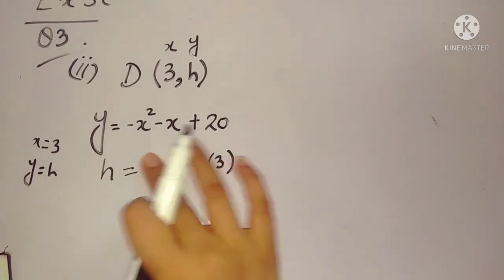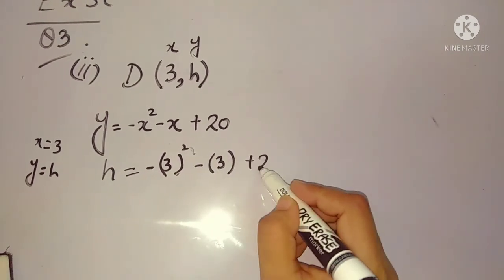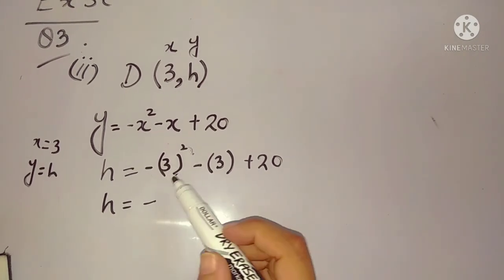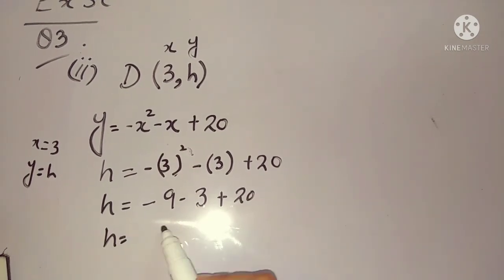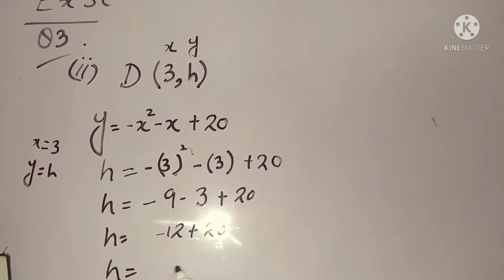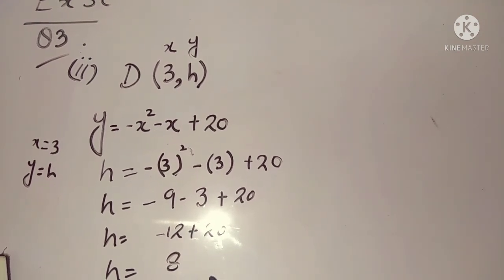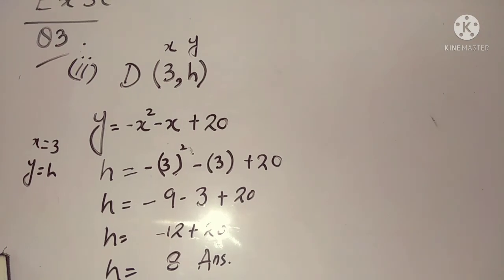The second part says: point D(3, h) lies on the curve — find the value of h. They have told us D has coordinates (3, h). In a coordinate, the first value is x and the second is y. So we substitute x = 3 and y = h into the equation. The equation is y = -x² - x + 20.